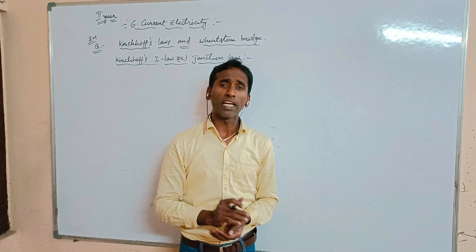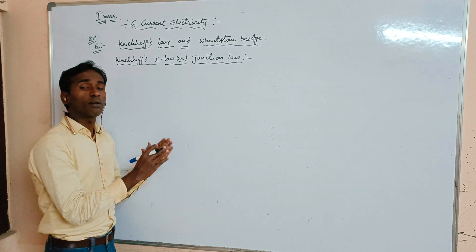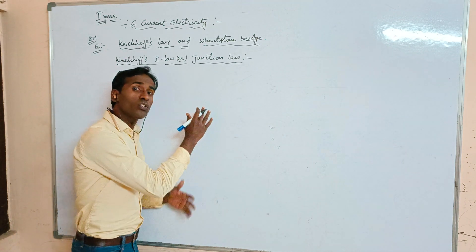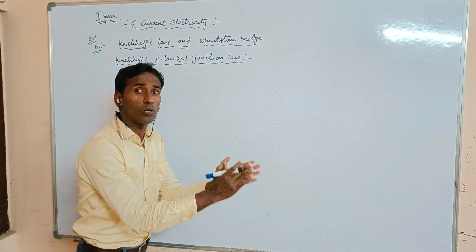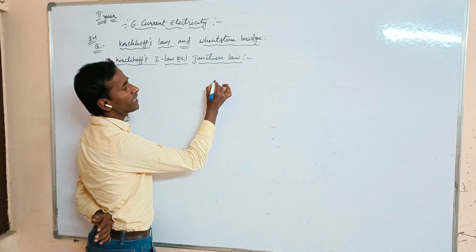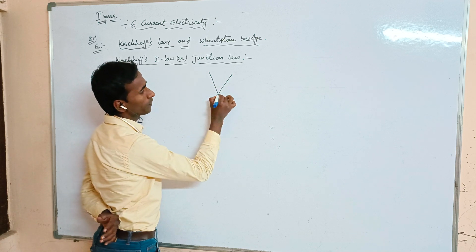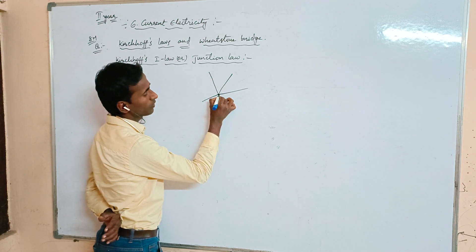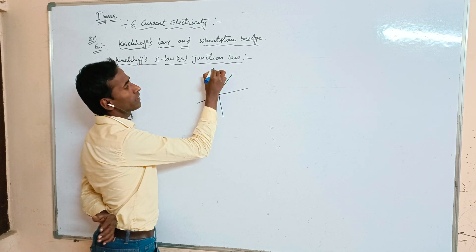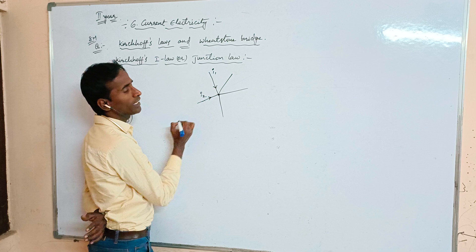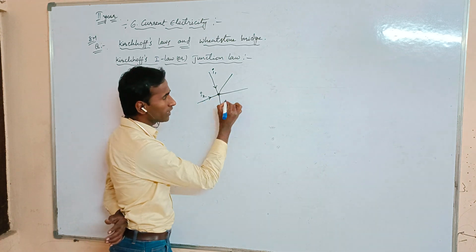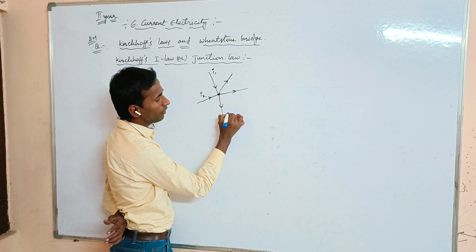Kirchhoff's First Law states: the sum of the current towards the junction is equal to the sum of the current away from the junction. In other words, the current coming into a junction equals the current leaving the junction. Let us consider current i1 and i2 meeting at a junction.